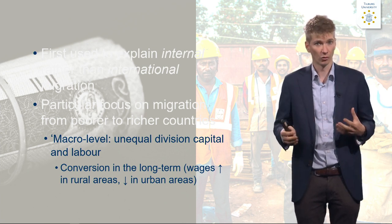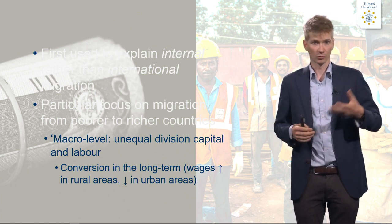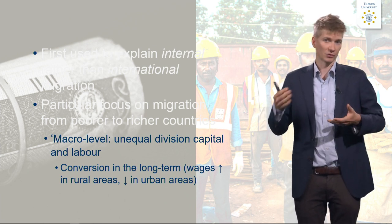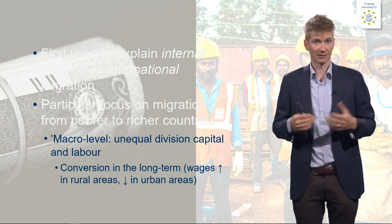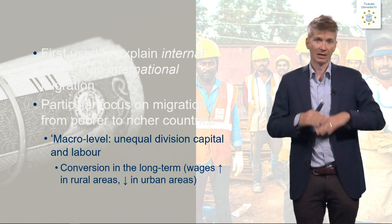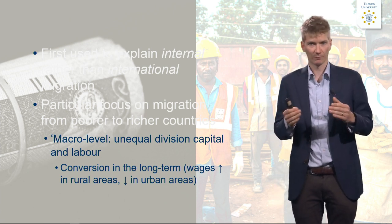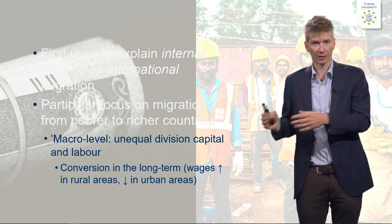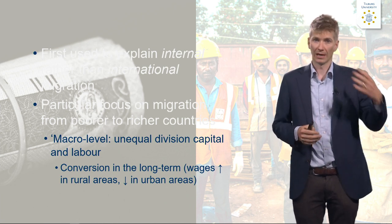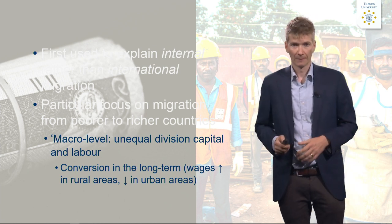In the long term there will be convergence — that is at least what the theory predicts — which means that wages will also go up in origin areas. If you send people abroad, the number of people entering the labour market goes down, and in the end there will be an economic equilibrium according to neoclassical theory. It explains why people move from poorer countries, where there are many people who cannot be incorporated into the labour market, towards countries with shortages and higher salaries.